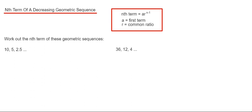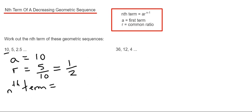Let's have a look at the examples here. We've got to find the nth term of these geometric sequences. We need two things: the first term, which is 10, and the common ratio. To get the common ratio, we divide the second term by the first term - so 5 divided by 10. We can cancel that down to one half. Now we put these two numbers into our nth term formula: 10 times one half to the power of n minus 1.